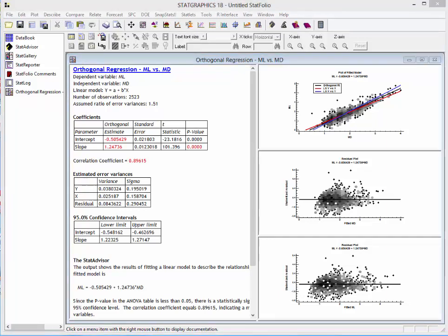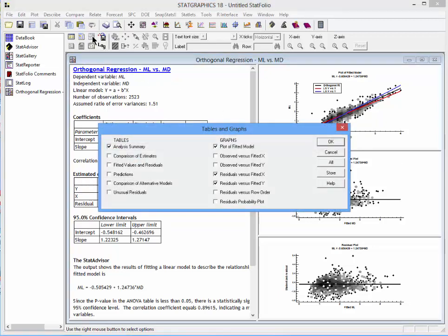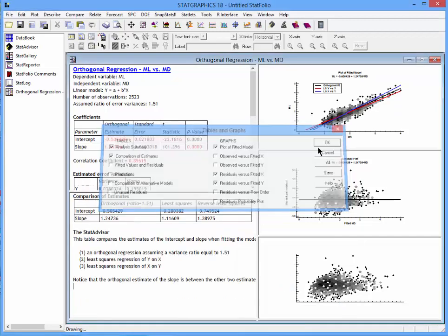You see slightly different patterns when plotted against those two variables. Finally, you can see how sensitive the estimated intercept and slope are to the method used to fit the line.